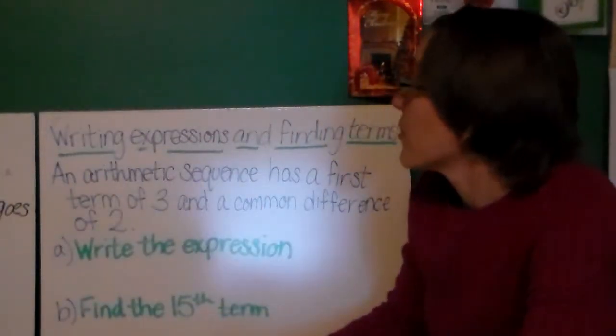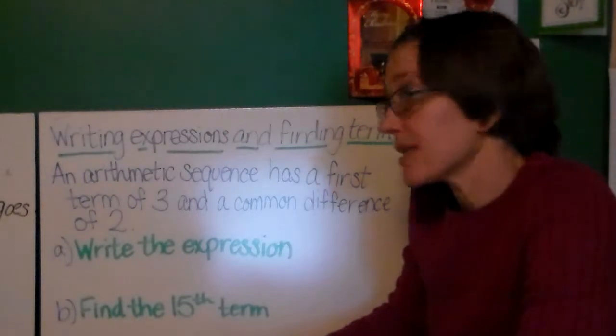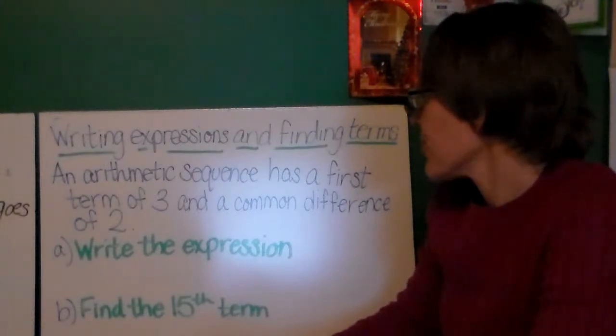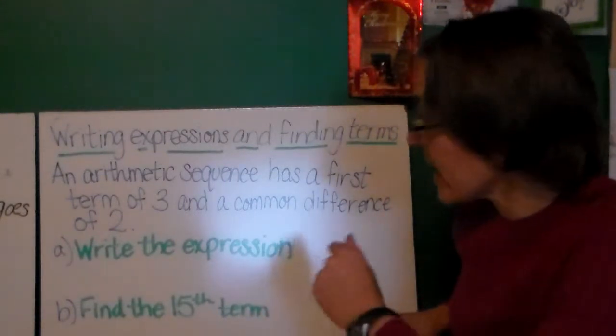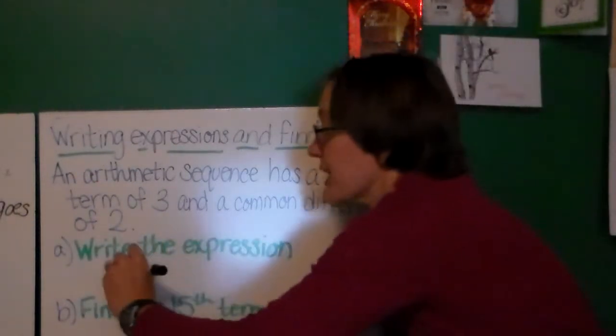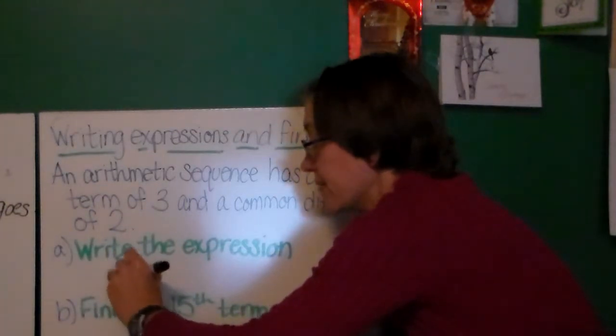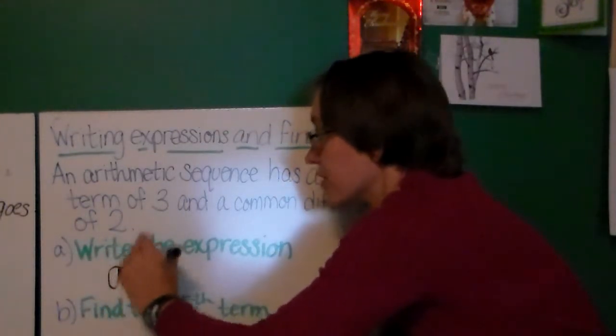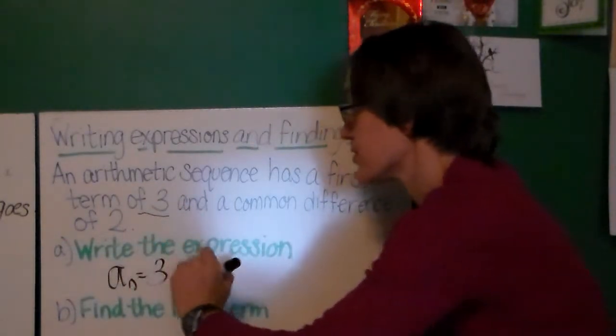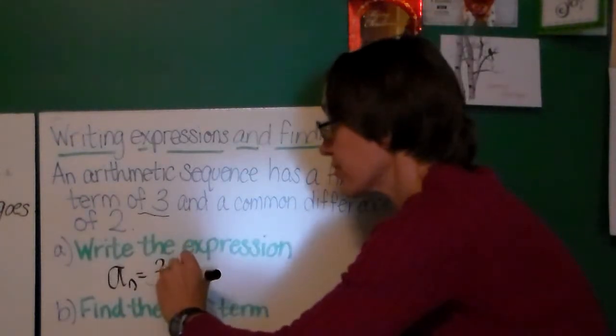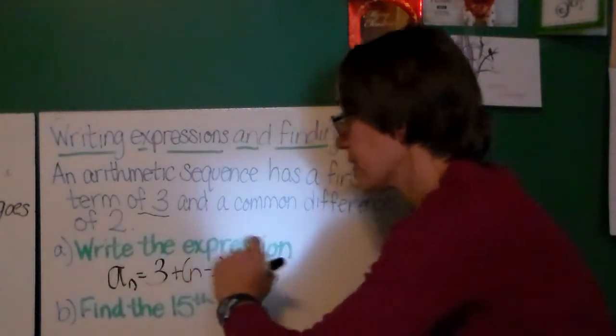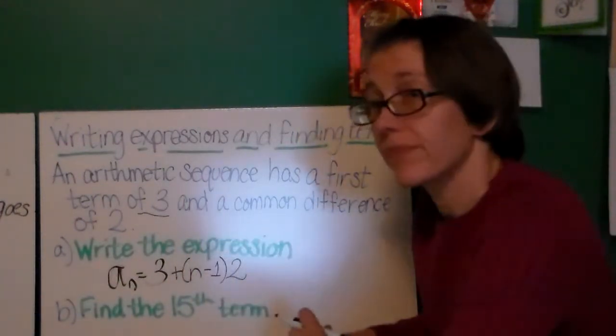Writing expressions and finding terms is an important skill with arithmetic sequences. Let's say that we have an arithmetic sequence that has a first term of 3 and a common difference of 2. Part A of this question says, write the expression. Well, fortunately, it's pretty easy to do this. I'm just going to write a sub n equals, my first term is 3. So, a sub 1 is 3. A common difference of 2, means that I'm going to write plus n minus 1, times that common difference of 2.